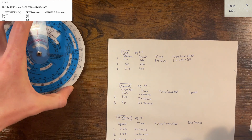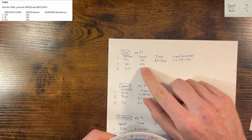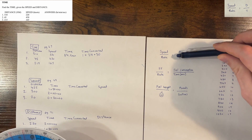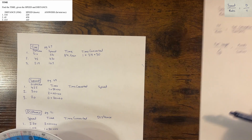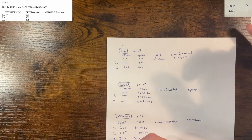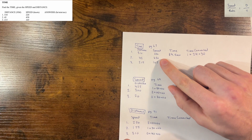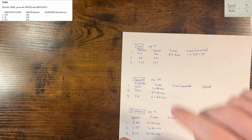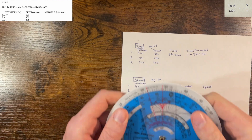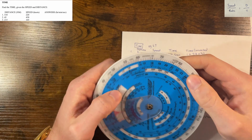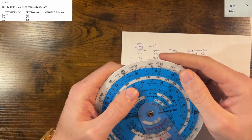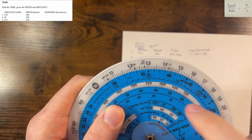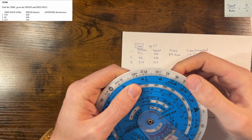Moving on to number two. Same thing — speed over rate index equals distance over time. In this instance, we're going at a speed of 430 knots for a distance of 45, so that's going to be pretty quick. We might want to use seconds. The seconds mark is right after 35, right on that 36 mark — that's going to be our rate index.